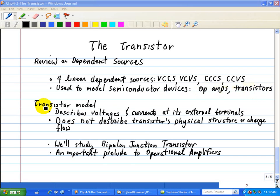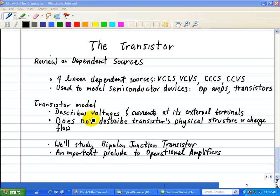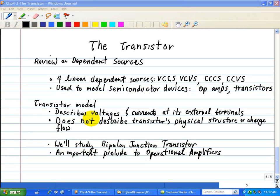We're going to focus our discussion on a transistor model, where we're going to describe the voltages and currents at its external terminals. However, the model that we're studying here does not describe the transistor's physical structure or charge flow. We'll focus our study on bipolar junction transistors, and it will serve as an important prelude to the study of operational amplifiers.